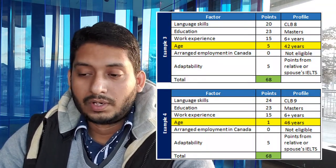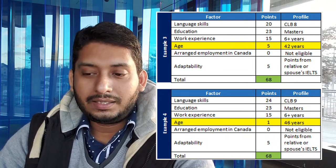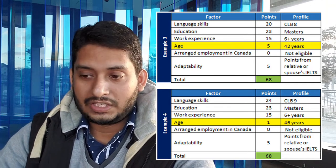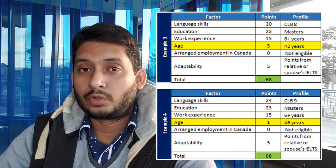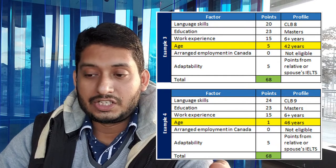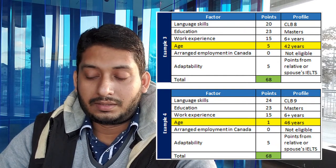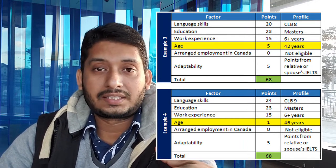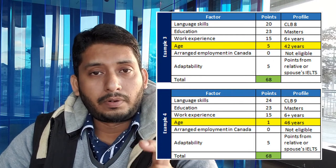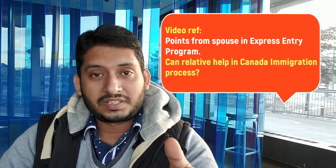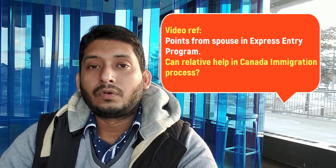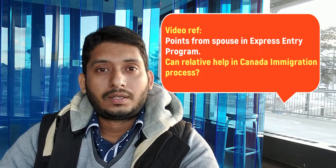For the work experience factor, if you're aged 36 or 42, you should definitely have six-plus years of experience. Now in Examples 3 and 4, I consider cases where you may not get CLB 9 or your age is even higher — say 46. In those cases, you have the option to go for adaptability points. If you're lucky and can claim points from your spouse, or if you have a relative in Canada, you can get an additional five points, bringing your total to 68 — above the minimum of 67. I'm giving video references for claiming points from a spouse and whether a relative can help in the Canadian immigration process.